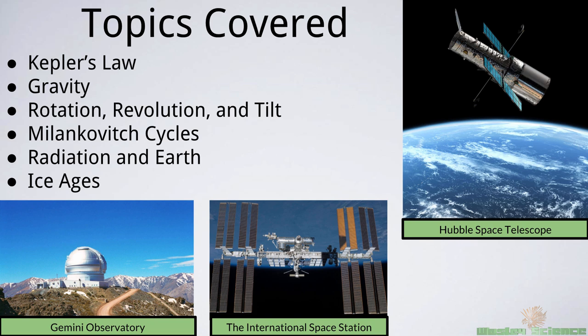Here I wanted to show you different pieces of equipment used to help us understand our solar system. On the bottom we have the Gemini Observatory, a very powerful telescope used on the surface of Earth. In the middle we have the International Space Station, a satellite that revolves around the Earth where people live for several months and scientists from all around the world run experiments in space. And all the way to the right we have the well-known Hubble Space Telescope, one of our most powerful telescopes — a satellite that spins around the Earth and has helped us see galaxies from very, very far away.